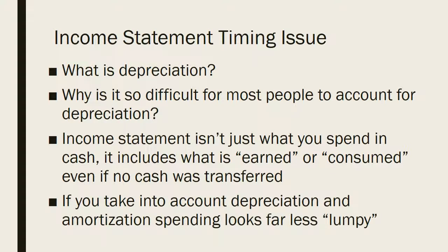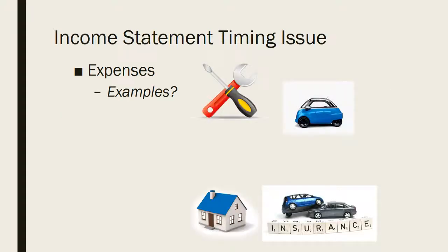The benefit of taking depreciation into account — and we'll talk about amortization — is that your budget starts to look far less lumpy. Let's say you buy a car for $5,000. Is that a $5,000 expense? Well, no, because there's still some value there. But if you take into account your monthly depreciation, you have a really good idea of what your typical monthly spending looks like once everything is included. Examples include cars, which we've discussed, and a home could also potentially depreciate over time as things get beat up and need to be fixed. If you do not fix things in a house, it could depreciate over time.